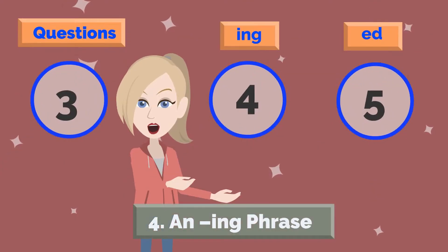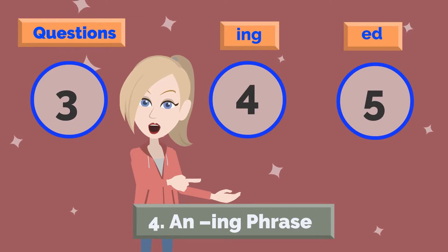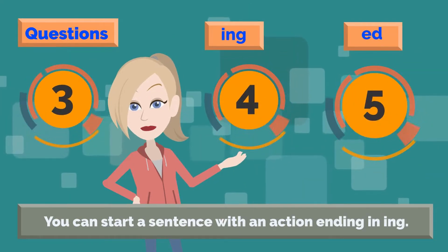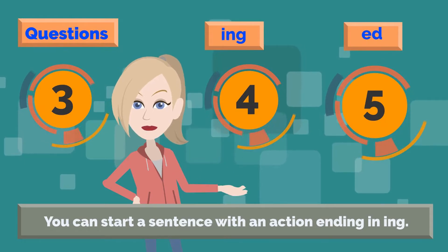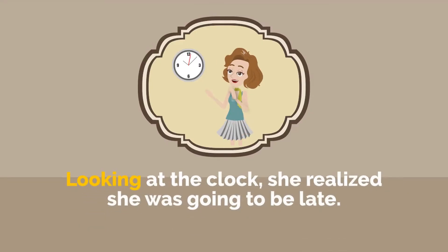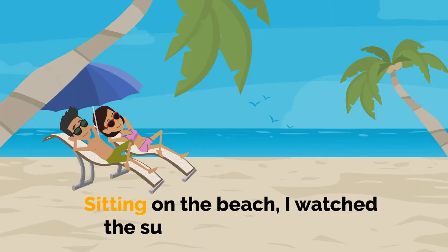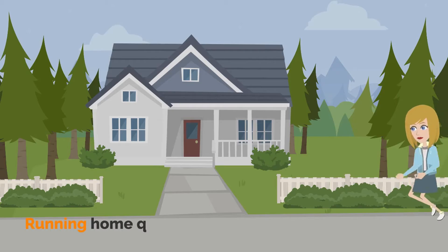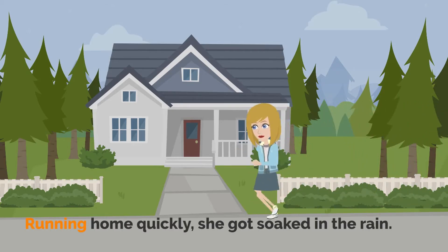4. An ING phrase. You can start a sentence with an action ending in ING. For example: Looking at the clock, she realised she was going to be late. Sitting on the beach, I watched the sun set over the ocean. Running home quickly, she got soaked in the rain.